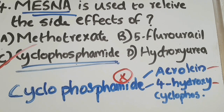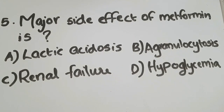That's why mesna is mainly used for preventing bleeding in the bladder. Hemorrhagic cystitis is one of the major side effects of cyclophosphamide, and to prevent this urotoxic side effect we administer mesna along with cyclophosphamide. The correct answer is option C: cyclophosphamide.